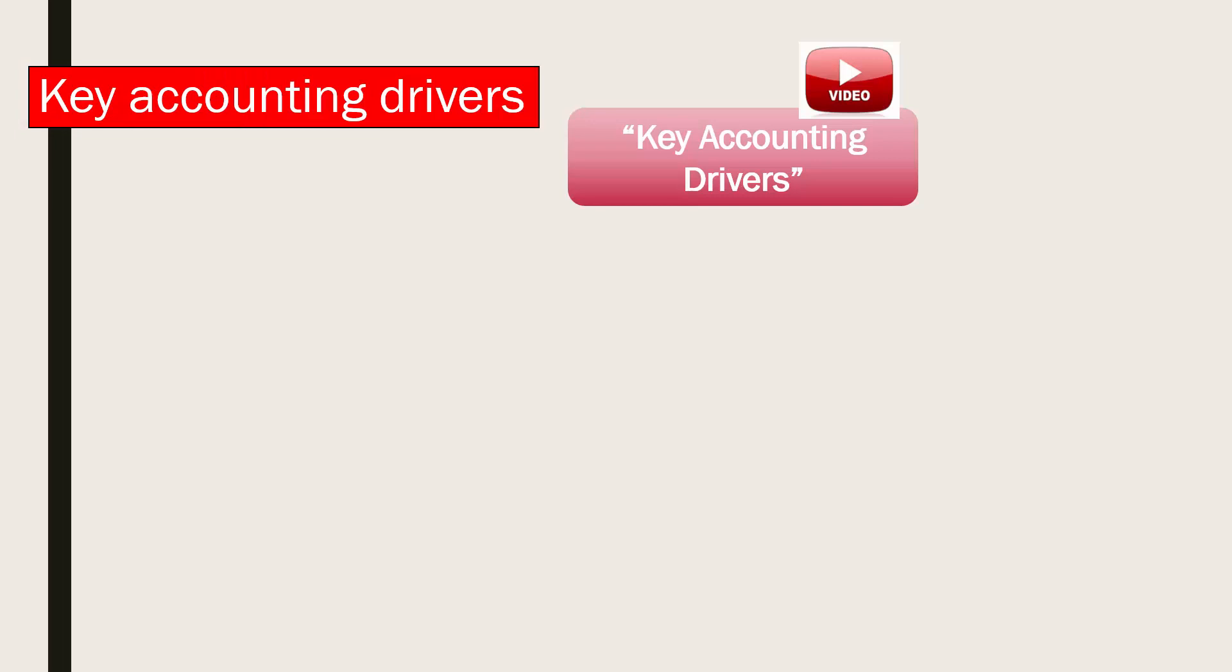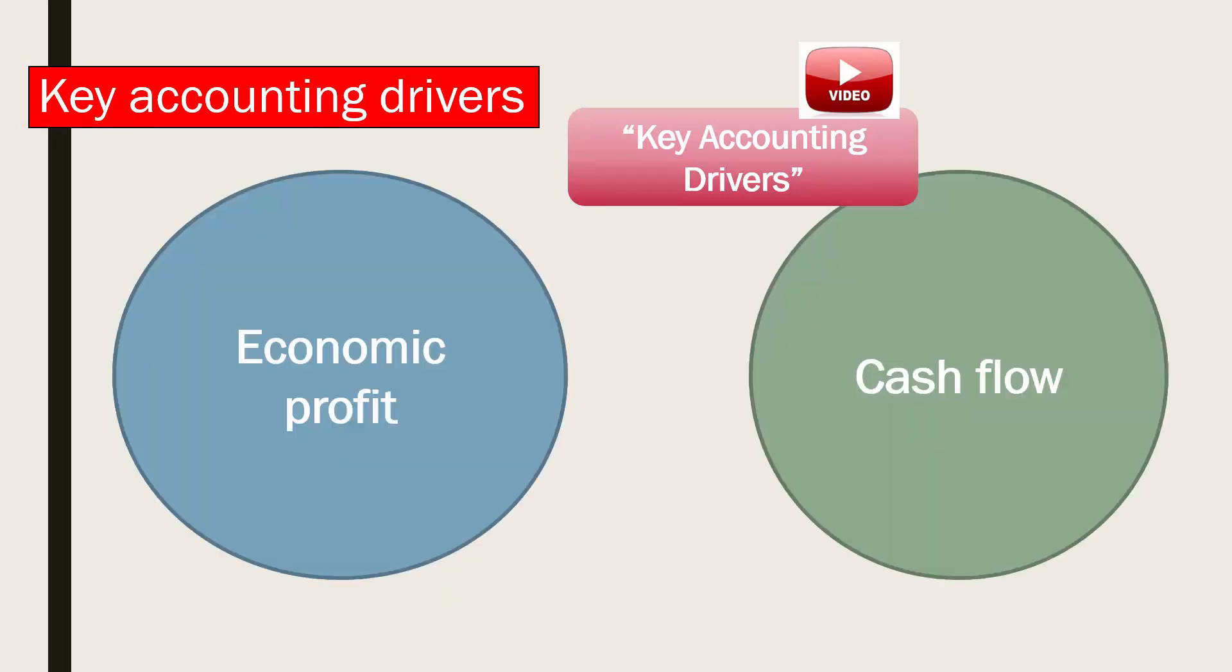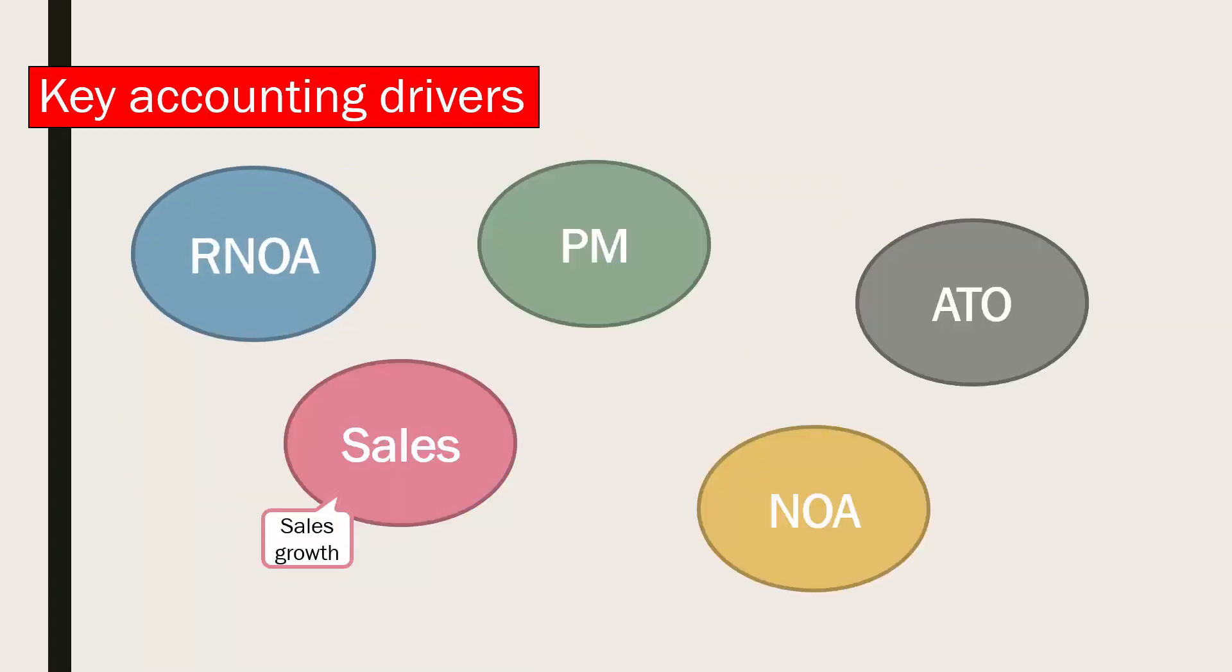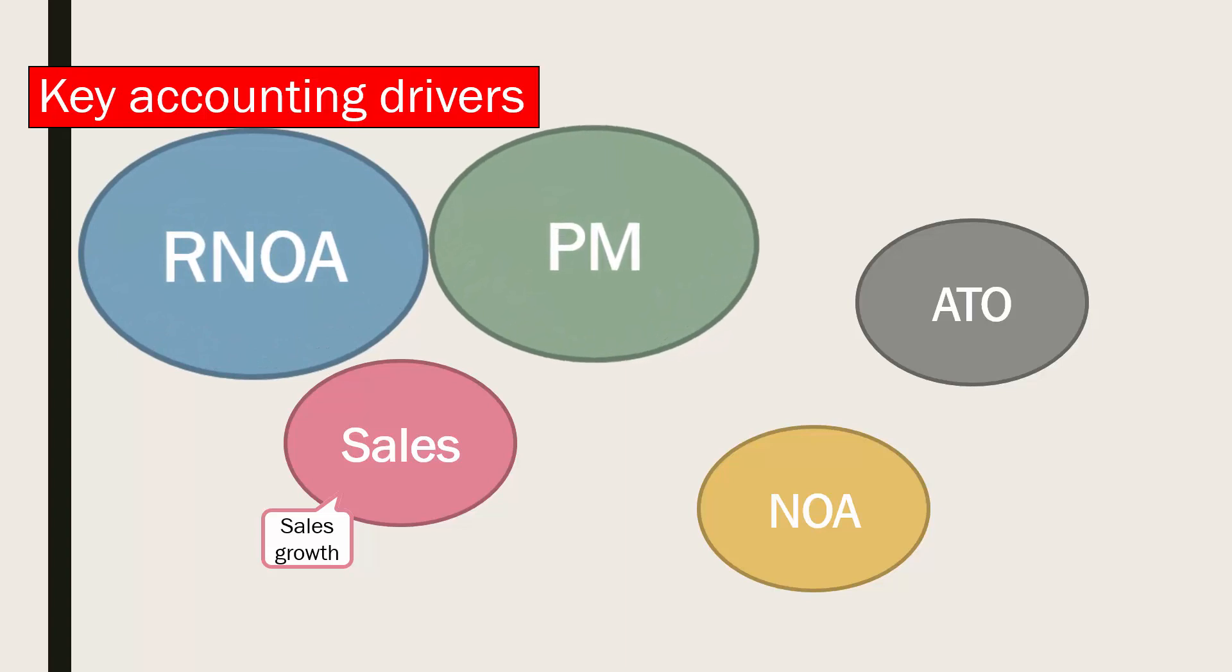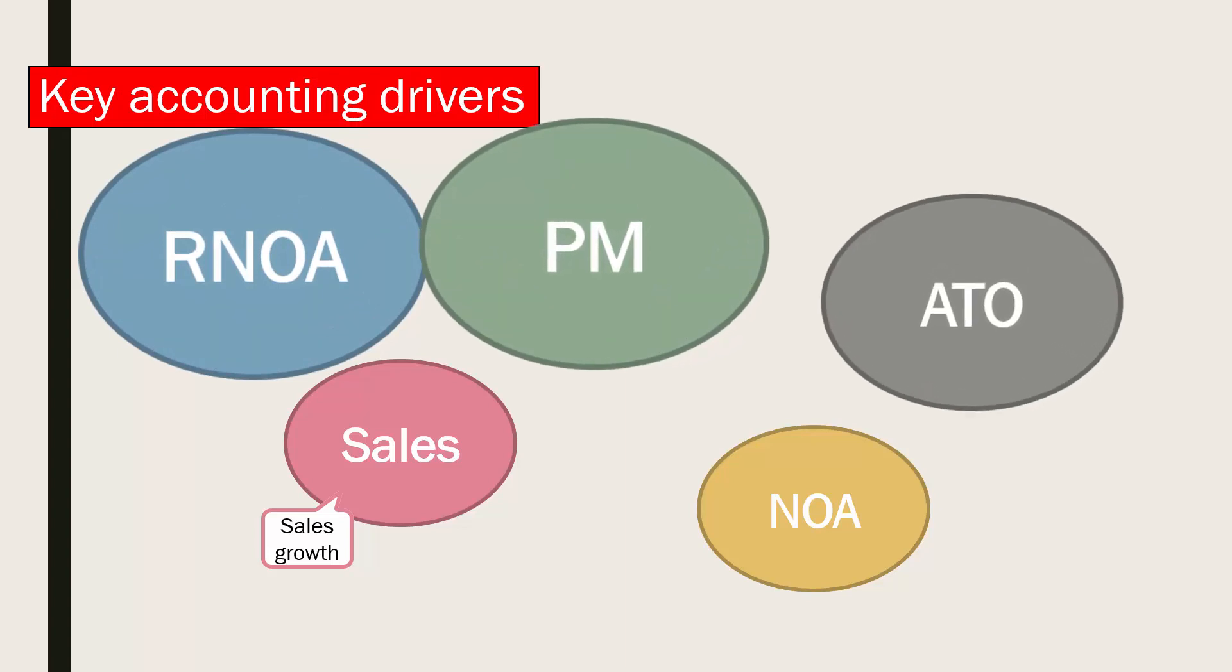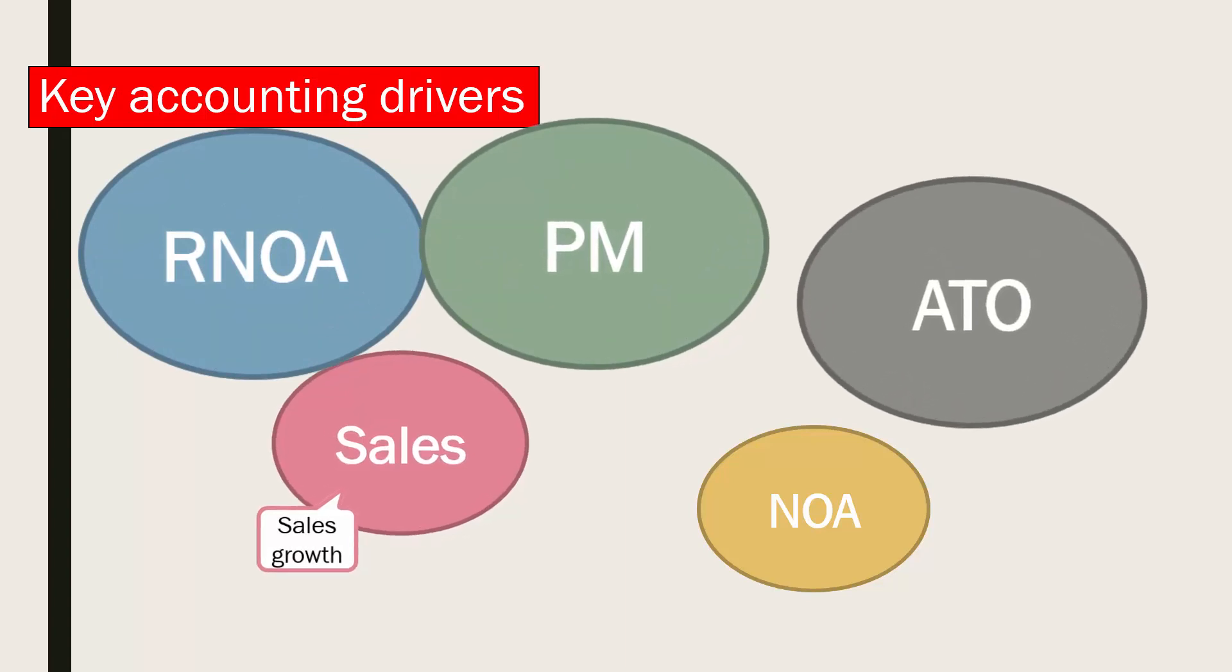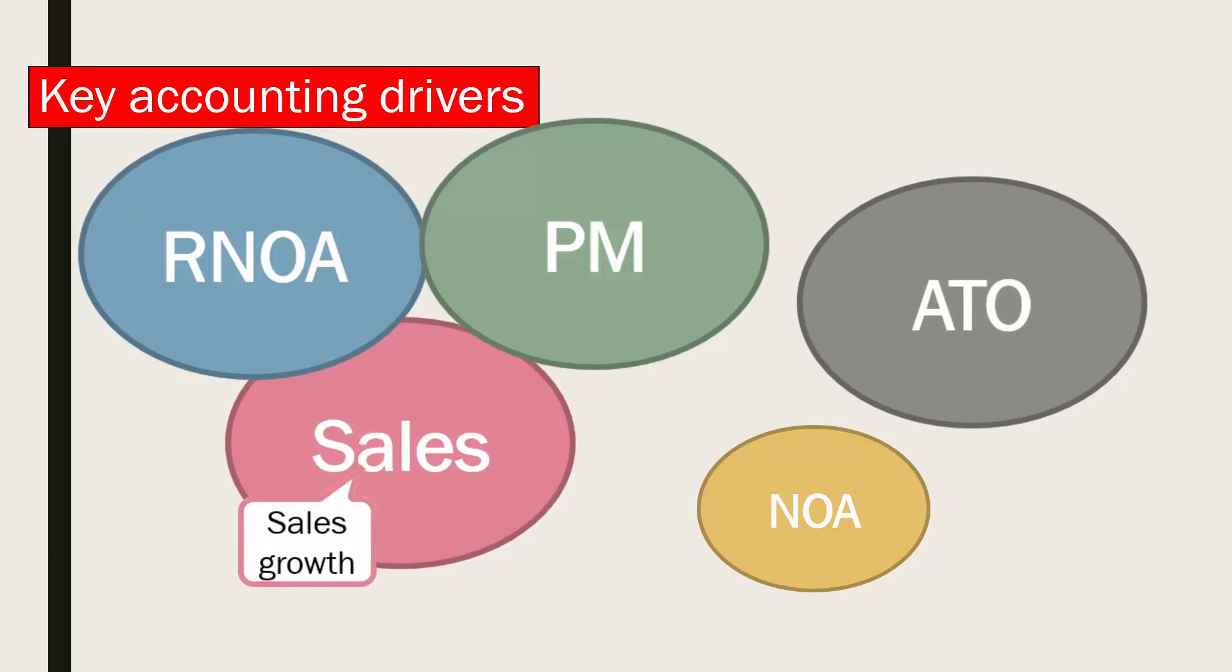In the video Key Accounting Drivers, we see the key accounting drivers for both economic profit and cash flow are return on net operating assets, profit margin, asset turnover, sales and sales growth, and net operating assets.